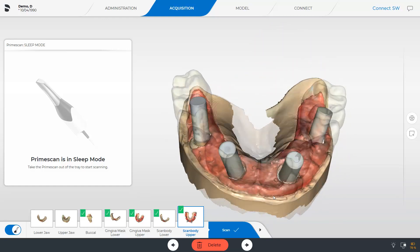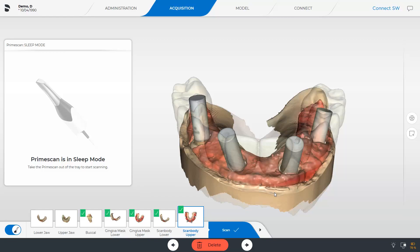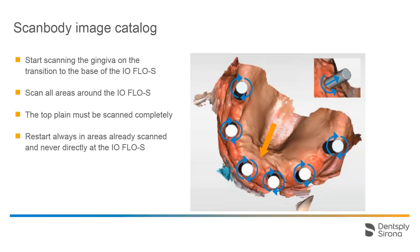Regarding the scan process for ScanBody image catalogs, we have some more helpful tips for you. Always start the scan at the gingiva at the transition to the IO-Flow-S, and not directly at the ScanBody. After the jaw has been scanned, scan all areas around each IO-Flow-S in order to capture the complete surface. The most important area is the top plane of the ScanBody, which must be scanned completely. In case of scan interruption, make sure to always start again in an area that was already scanned before, such as at the gingiva with distinctive geometry, and never directly at the ScanBody. The acquisition of the ScanBodies requires a high degree of precision and attention, since this scan is of importance for the correct fit of the superstructure.